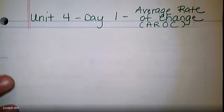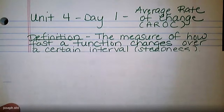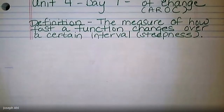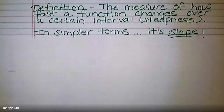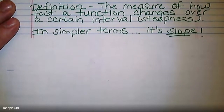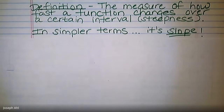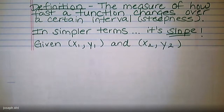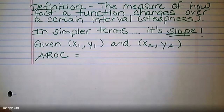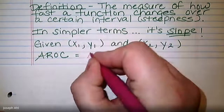We're going to talk about what average rate of change is and how we can calculate it. The definition of average rate of change is: it is the measure of how fast a function changes over a certain interval — it has to do with the steepness of the function over a certain period of time. In simpler terms, it's just slope. Since we're hopefully experts from page 24, we know we can calculate slope if given two points with coordinates (x₁, y₁) and (x₂, y₂).